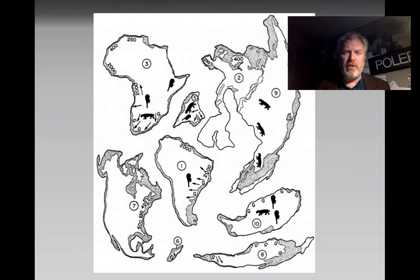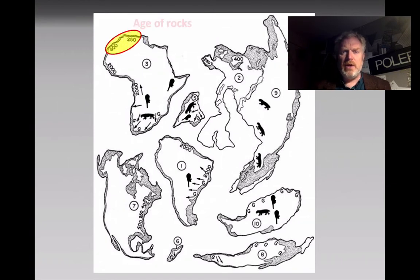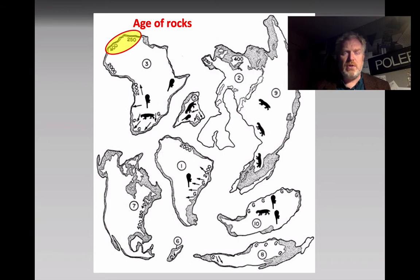We can't do that randomly — we need to think about the geological evidence for how we put these together. One thing to consider is the age of the rocks. The numbers on the edges of the continents show the dates of rocks found in two different continents, so we need to match those up.